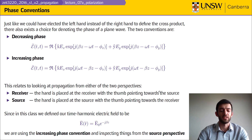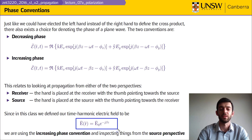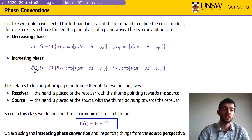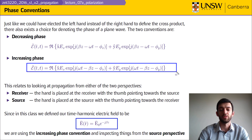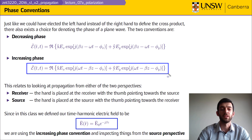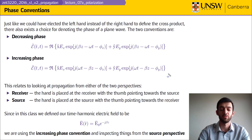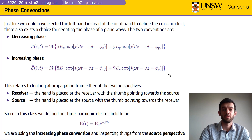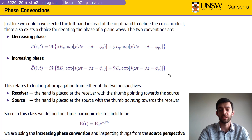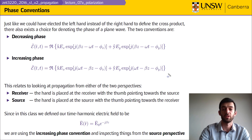Since in this class we have been looking at the electric field defined with e to the negative j·β·z, we notice that follows the definition with the increasing phase. So in this lecture we will look at polarization in terms of the increasing phase convention and looking at things from the source perspective.